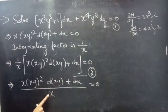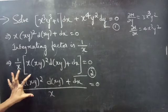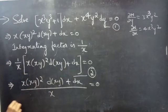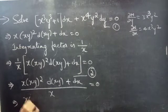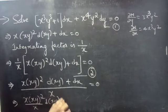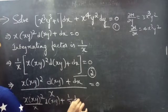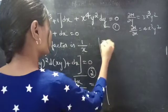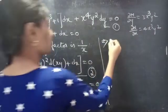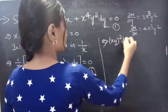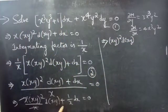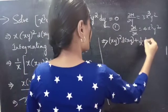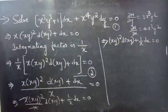Since we have two terms in the numerator and one in the denominator, we split the expression into two terms: x times (xy)² over x times d(xy) plus 1/x times dx equals 0. The x cancels, giving (xy)² d(xy) plus 1/x dx equals 0.